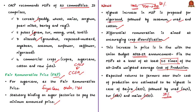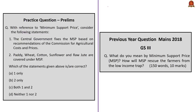This is all about this news article. In this discussion we covered MSP, the Cabinet Committee on Economic Affairs, the Commission for Agricultural Costs and Prices, and FRP — that is the fair and remunerative price of sugarcane. The prelims practice question based on this topic will be discussed at the end of the session.